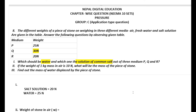Problem number 8: The different weights of a piece of stone weighed in 3 different media — air, fresh water, and salt water — are given in the table. Answer the following questions. We have three media P = 25 N, Q = 30 N, R = 20 N. We know that air does not experience upthrust, but both water and common salt solution experience upthrust. So the medium with the greatest weight is air, since liquid media reduce the apparent weight through upthrust.